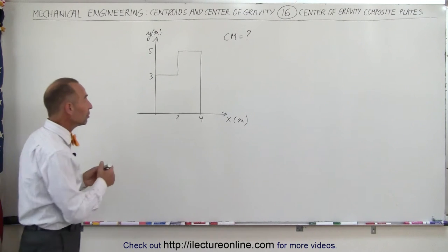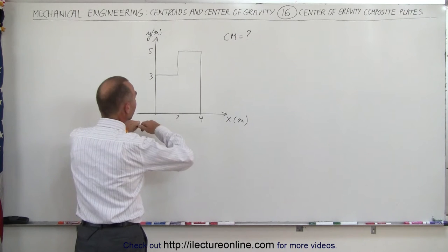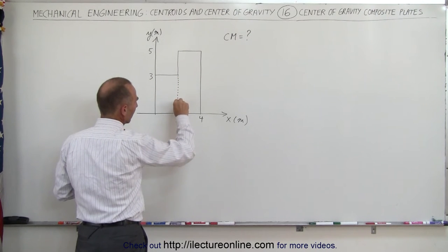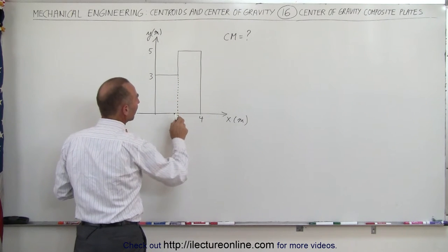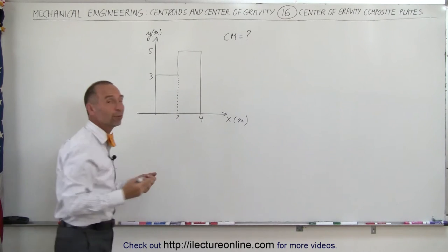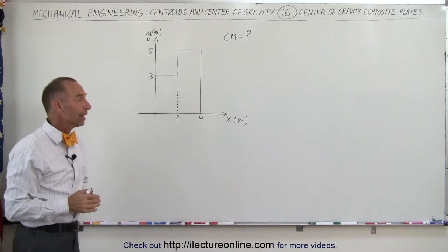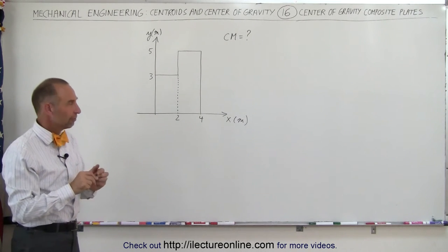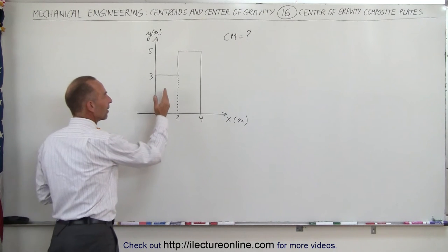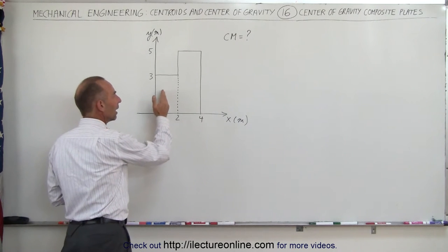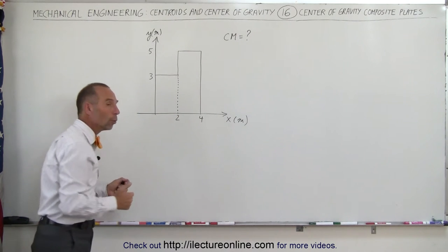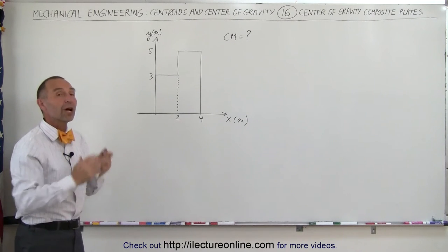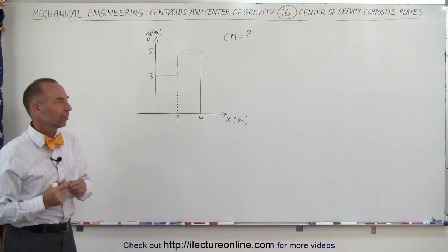For example, if we draw a dashed line from this point straight down, we can see that the original object is really made up of two rectangles, and rectangles we can easily find the center mass of. So if we find the center mass of the left rectangle and the center mass of the right rectangle, will that allow us to find the center mass of the whole object? And the answer is yes.